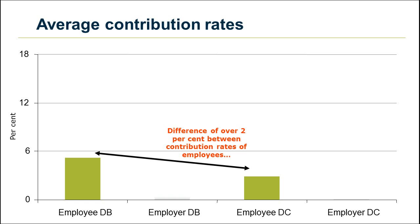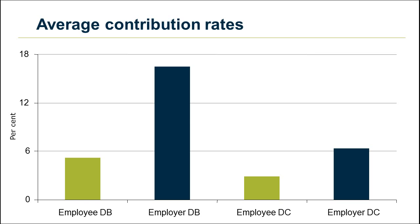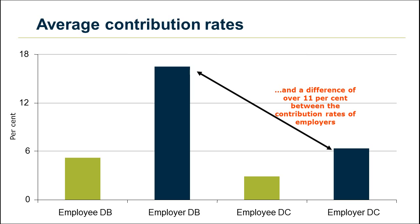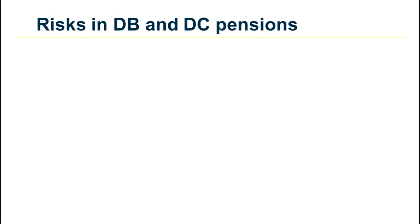The difference between the contribution rates of employers in defined benefit and defined contribution schemes is even greater, over 11%. Generally speaking, higher contribution rates result in higher pensions.